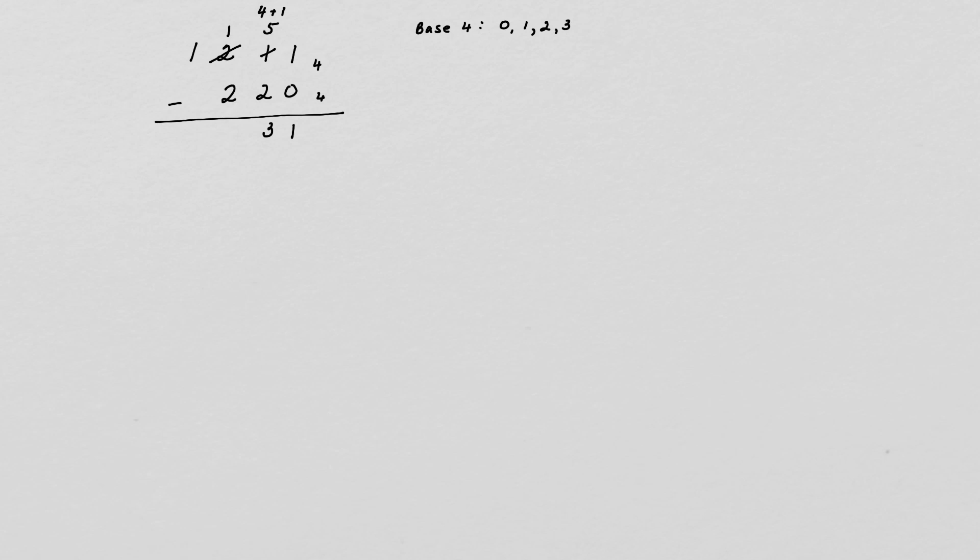Now 5 is not a base 4 number, but I'm using that in order to be able to subtract. And then again, we have 1 minus 2. Can't do it. We have to borrow a group from here, so that leaves us with nothing in that column. And this one, we're going to add 4, and we get 5. And 5 minus 2 again is 3. And so our answer is 3, 3, 1, base 4.